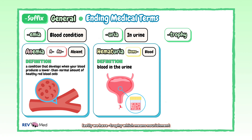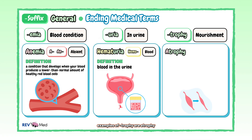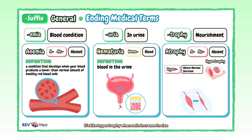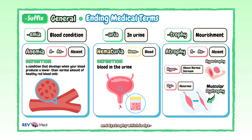Lastly we have "-trophy", which means nourishment. Examples of "-trophy" are atrophy — which has "a" for our prefix absent — and in medical terms this means when there's a wasting of something, so you can say it's malnourishment. Then there's hypertrophy, when cells increase in size, and dystrophy, which has "dys" meaning abnormal.